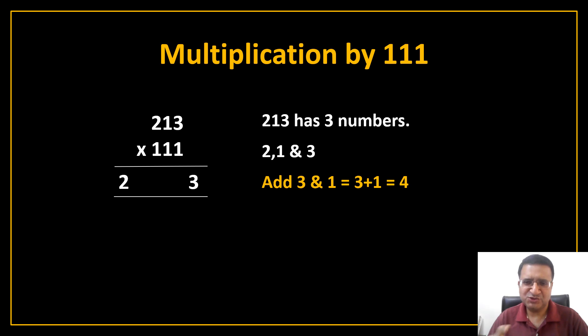What do you have to do? Add 3 and 1 as you did in multiply by 11. So last 2 digits are 1 and 3. Add them you get 4. Insert 4 here. Now you have to remember one more step. Because we are multiplying 213 by 111, so you have to add all the 3 digits of 213. So you get answer 6. 3 plus 1 plus 2 is 6. So add this 6 here.